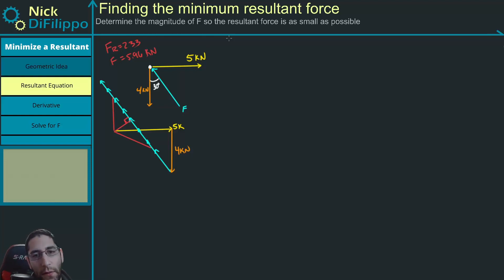Well, what I'm calling the resultant equation is it comes from the Pythagorean theorem. We've used it a lot that my resultant force, FR, the magnitude, is equal to the square root of the sum of my components in the x-direction squared plus the sum of the components in my y-direction squared.